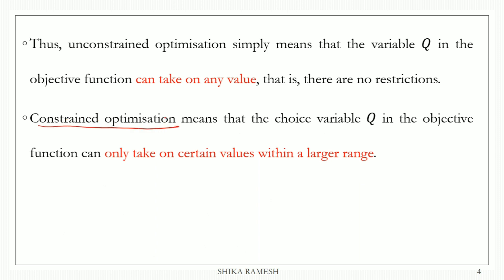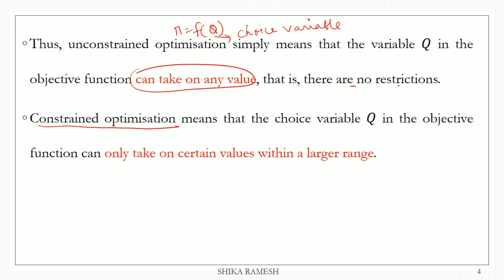We will say that function pi is the function of q. I will say that q is the choice variable. There is a constrained optimization problem where in brackets there is the choice variable. There are no restrictions — pi is a function of q. If you want to sell any output, you can find the profits. If you want to maximize it, that means a constraint optimization problem.